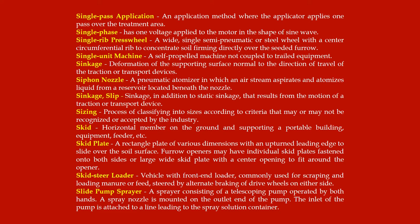Single phase: has one voltage applied to the motor in the shape of a sine wave. Single rib press wheel: a wide single semi-pneumatic or steel wheel with a center circumferential rib to concentrate soil firming directly over the seeded furrow. Single unit machine: a self-propelled machine not coupled to trailed equipment.